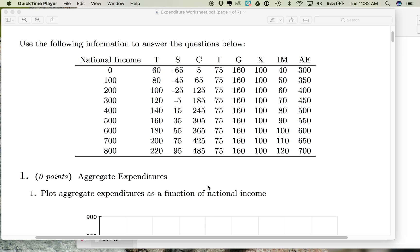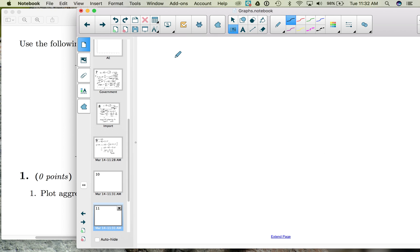We then broke that down and looked at the parts of aggregate expenditures: C plus I plus G plus X minus IM, and for each of those parts we found a formula.